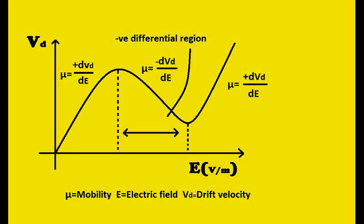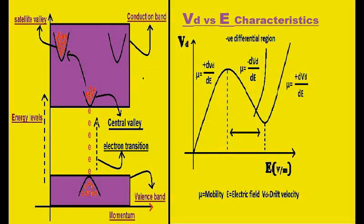Looking at the VD versus E graph for gallium arsenide: from zero to low electric fields, due to thermal excitation, electrons occupy the central valley and mobility increases. We can see from the graph that from zero to point A, the curve increases linearly — meaning the differential change in drift velocity increases with applied electric field.